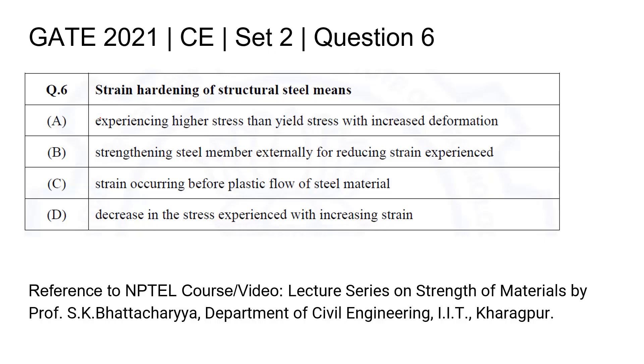Option A: Experiencing higher stress than yield stress with increased deformation. Option B: Strengthening steel member externally for reducing strain experienced.